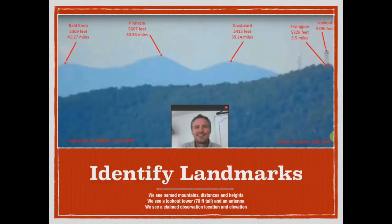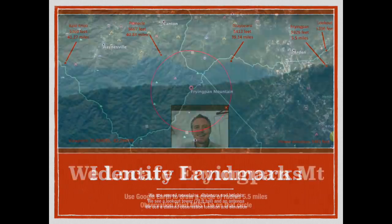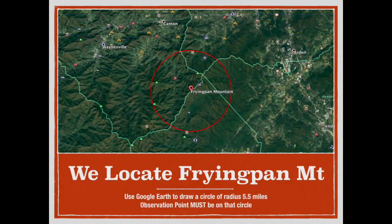It looks like we have four mountains here. We have a ridge in the foreground with an observation tower and a radio tower on it. Now that we have that established, we're going to go with things that we know for sure. We know where Frying Pan Mountain is. We locate the observation tower and we know that we are 5.5 miles from that, so we draw a circle around it with a radius of 5.5 miles.